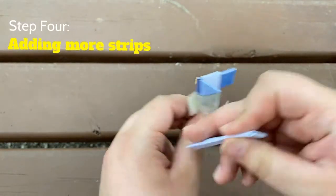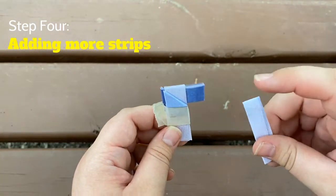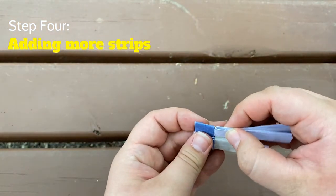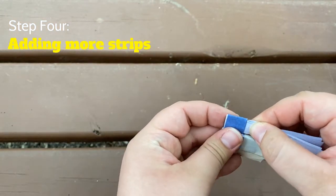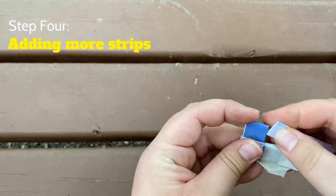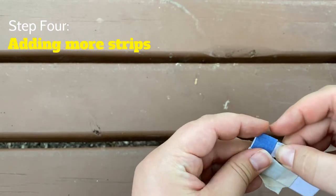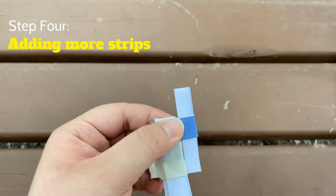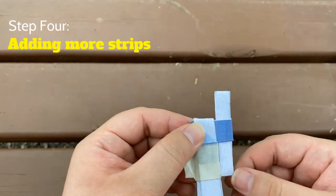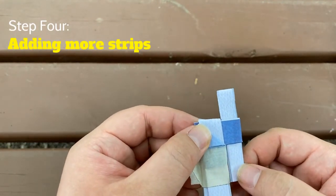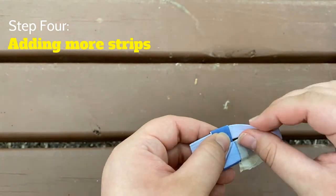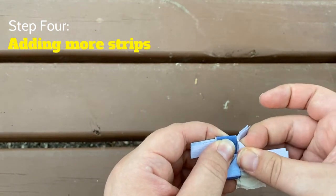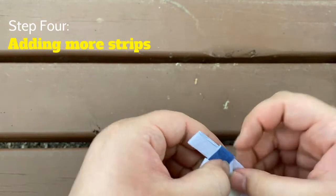So what you're going to do is you're going to take your next strip of paper, and you're going to make sure that the fold side is up, and you're going to stick it inside of the loop you just made. It takes a little finagling, but once you have it, you got it. So then once you have it through the loop, you're going to fold it just like how you did before. So you're going to fold one tail part up towards the previous strip, and you're going to fold it up.